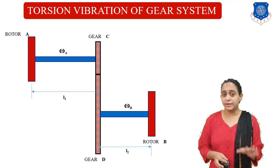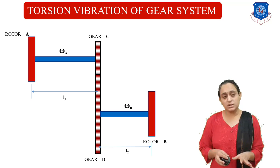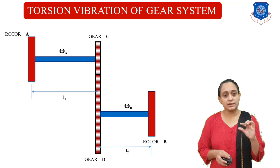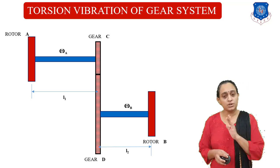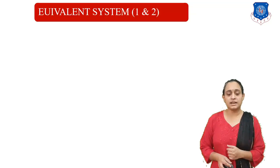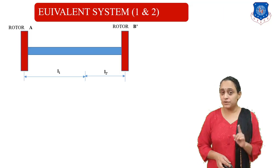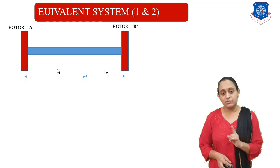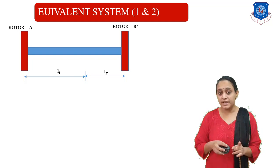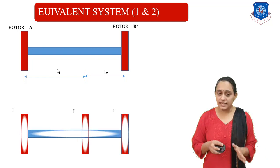Here I have already mentioned omega A and omega B rotations. If we consider the diameter, between shaft A and gear C there is diameter D1, and between gear D and rotor B there is diameter D2. Now let us start our equivalent system. There are basically two equivalent systems. In the first equivalent system, we consider only rotor A and rotor B-dash, where rotor B-dash is an imaginary rotor.